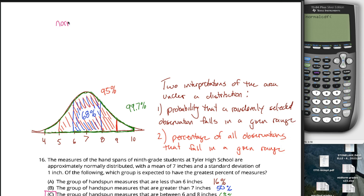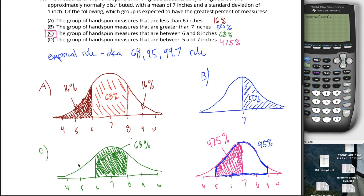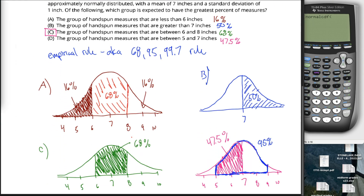The four inputs of normalCDF are: the lower bound, the upper bound, the center (mean), and the spread (standard deviation). For part C — bounds 6 to 8, mean 7, standard deviation 1 — I type normalCDF(6, 8, 7, 1). Hit Enter, and it spits out 0.6827, or about 68.27%. Our estimate of 68% was pretty good, but 68.27% is more precise. You don't need to be this precise for this problem, so the empirical rule is perfectly sufficient.